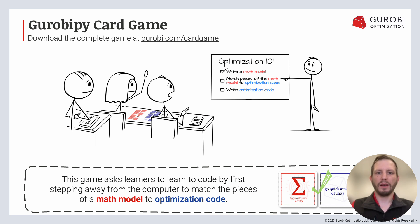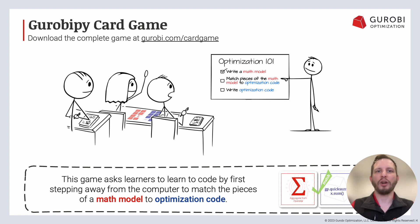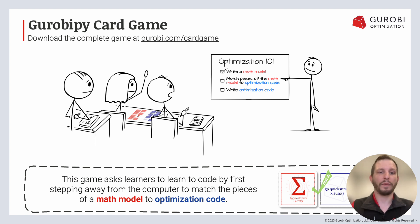Another really cool learning tool developed here at Gurobi is a GurobiPy card game. This is more for introductory level individuals — it's a card game you just print out, like a matching game, where you match parts of a formulation with a chunk of code that does the same thing, matching the math model to the optimization code. It's a great fun way to build internal memory of what goes where and how to code up summations, variables, and constraints. If it's your responsibility to help others understand mathematical optimization, this is a great way to get people interactive and learning.